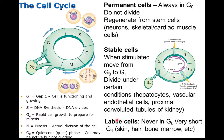Labile cells are never in G0 and they have a very short G1. These include skin, hair, bone marrow cells, et cetera, and these will divide and replicate throughout life.